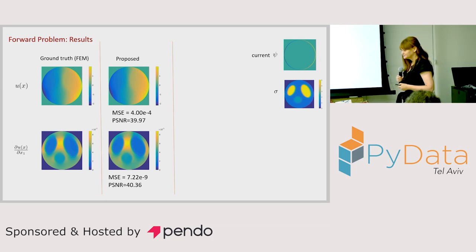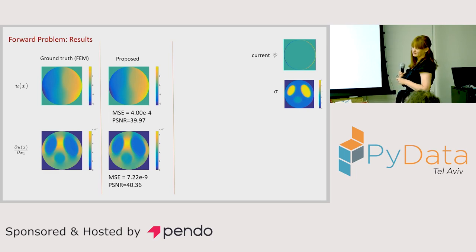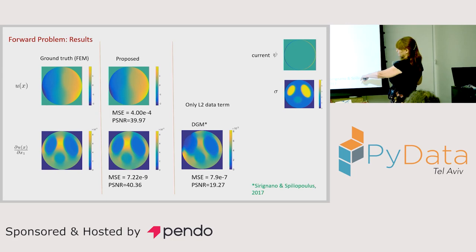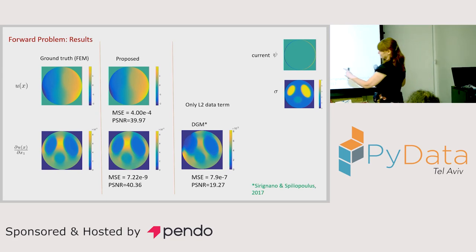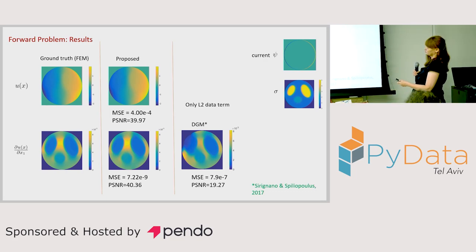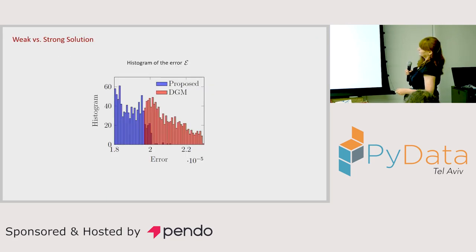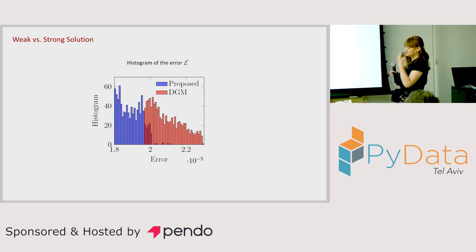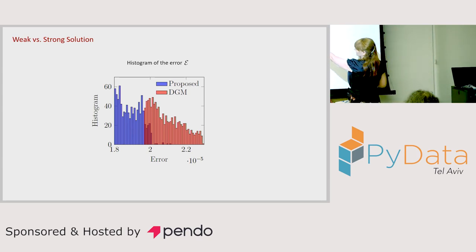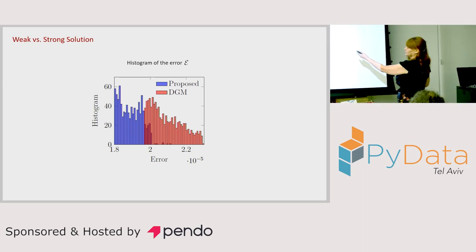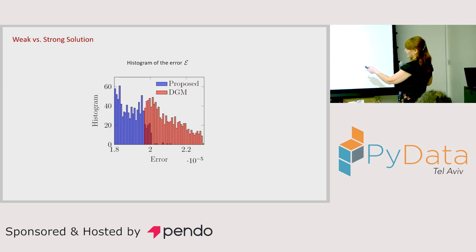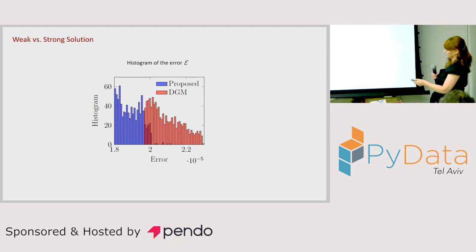Comparing with a method published in 2017 that used only the L2 norm and not the L-infinity norm, we can see artifacts with that approach. The L-infinity norm gives a significant contribution. Plotting a histogram of errors, the DGM method without L-infinity has more high-error points than our method. This is a very important observation.